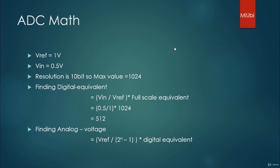Now finding the digital equivalent - you divide your input with V reference and multiply with the full scale. You will get the equivalent digital value.